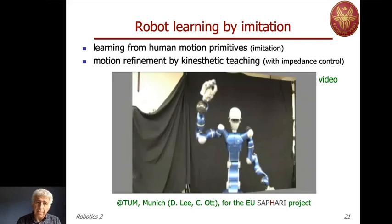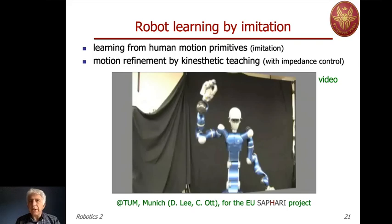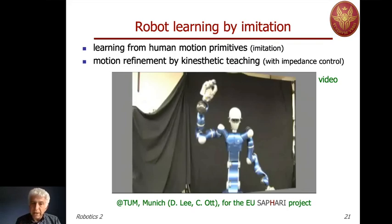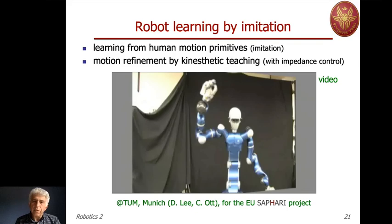The next example uses learning in the modality of human imitation in the first phase. A human motion is recorded by a Viking system and then mapped into the motion of the right arm of the Justin manipulator. This motion of the human has been parameterized by motion primitives and then programmed into the motion of the right arm of the Justin manipulator.